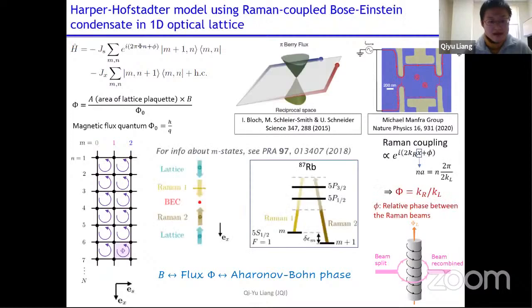We engineer this phase by Raman transition. So these m states are internal atomic states. For us, they are the F equals one manifold of rubidium atoms, and they are the MF state. And for details of these states, you can look at this reference. And so when the atoms hop from m site to m plus one site, it scatters two photons and picking up two Raman recoil, two h bar k r. And meanwhile, this Raman coupling will give you a phase factor proportional to two k r x. And a few line algebra will show you that the transverse flux phi in this model here is equal to the ratio of the wave number of the two lasers involved. The lattice laser is used to create the n sites along this direction.